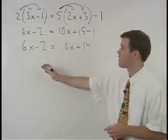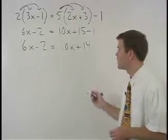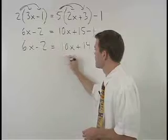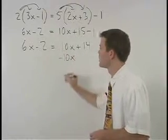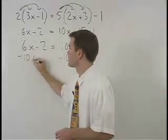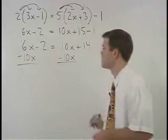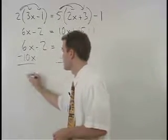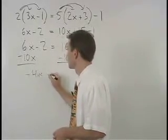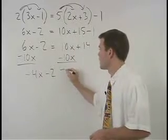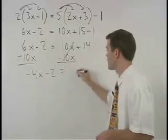Moving our variables to the left and numbers to the right, we start by subtracting 10x from both sides. On the left, we get negative 4x minus 2, and on the right, we get 14.